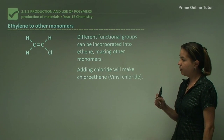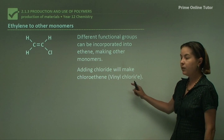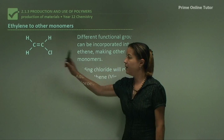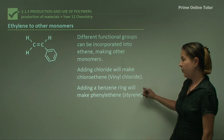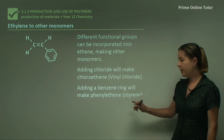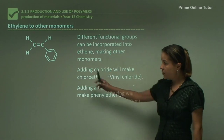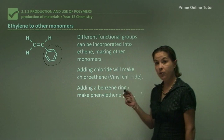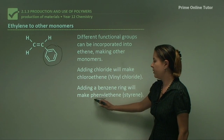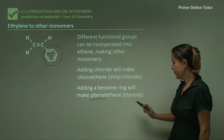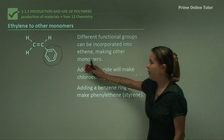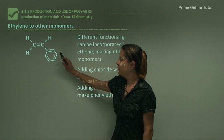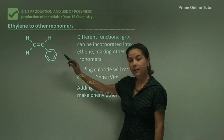If we incorporate a chloride group, we'll get chloroethene, which is also called vinyl chloride. And if we add a benzene ring, we'll make phenylethene, or styrene. This benzene ring is actually called a phenyl group in organic chemistry — that's where we get the name phenylethene, the common name being styrene. Every corner on this benzene ring is a carbon atom.